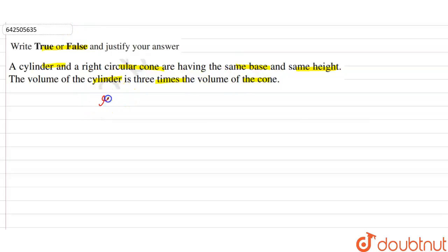Right, so let's take the radius of the cone and the cylinder as r, and the height as h. And the height of the cone and cylinder is h, and r is the radius of the cone and cylinder.